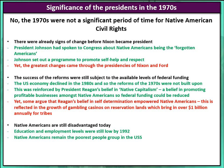The final argument we could make, which again is strong, is that Native Americans are still disadvantaged today despite the legislation of the 1970s. Education and employment levels are still very low by the end of our course in 1992, and even to this day. Native Americans remain the poorest people group in the USA.